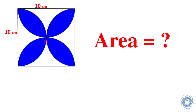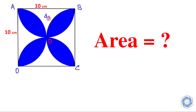Let us give some names to the vertices, and let us take the area of the white space as delta 1, this as delta 2, this as delta 3, and this as delta 4.